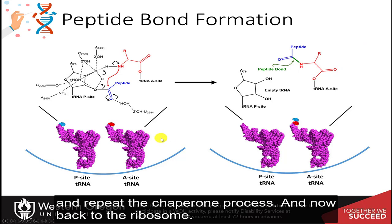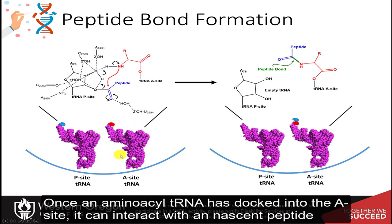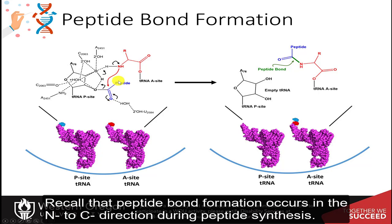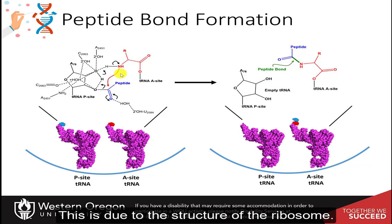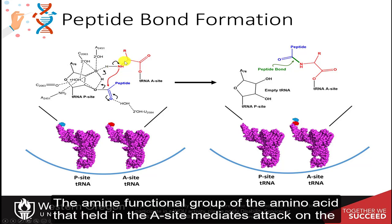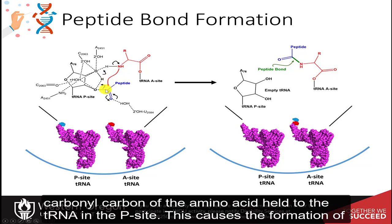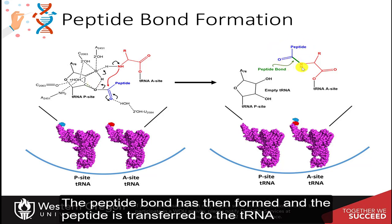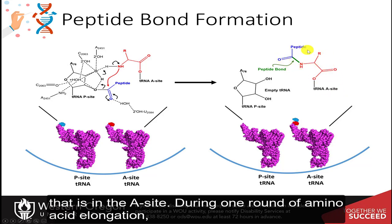Once an aminoacyl tRNA is docked into the A site, it can interact with the nascent peptide — or the initiator tRNA if this is the first round — and form a peptide bond. Peptide bond formation occurs in the N to C direction during peptide synthesis, due to the structure of the ribosome. The amine functional group of the amino acid held in the A site mediates attack on the carbonyl carbon of the amino acid held to the tRNA in the P site. This causes the formation of an oxyanion intermediate, followed by the release of the tRNA in the P site. The peptide bond then forms and the peptide is transferred to the tRNA in the A site.